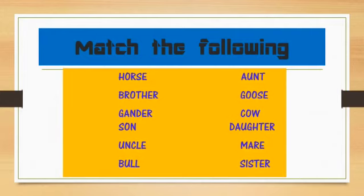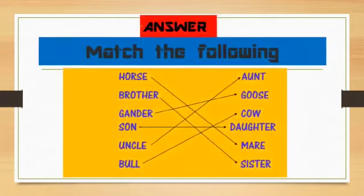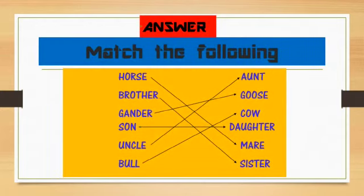The next exercise is match the following. Horse, Gander, Son, Uncle, Bull matched with: Mare, Goose, Daughter, Aunt, Cow. Horse — Mare. Gander — Goose. Son — Daughter. Uncle — Aunt. Bull — Cow.